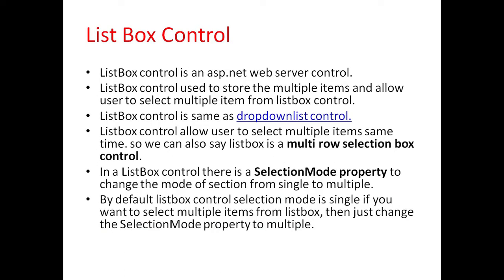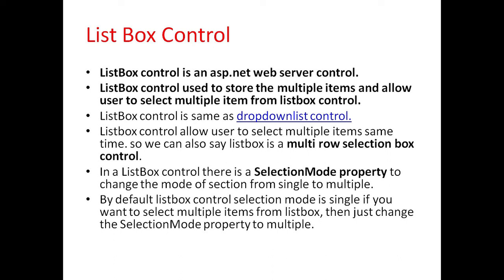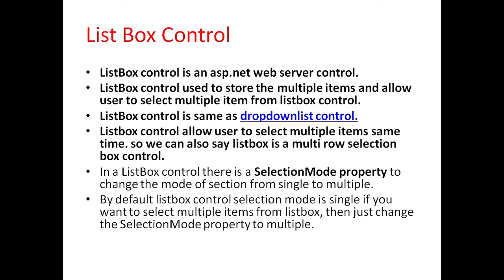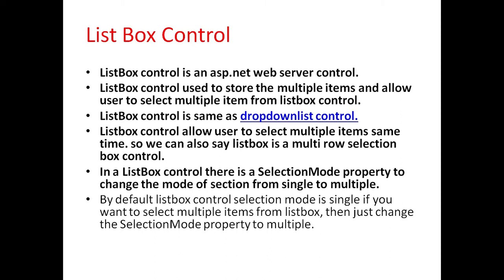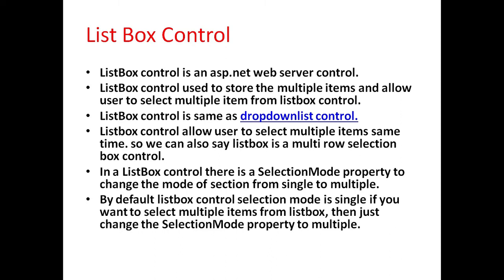Next is list box control. List box control is an ASP.NET web server control. This control is used to store multiple items and allow the user to select multiple items from the list box. Unlike the drop down list, the list box allows the user to select multiple items at the same time, so we can also call it a multi row selection box control. In a list box control there is a selection mode property to change the mode of selection from single to multiple. By default, the list box control selection mode is single. If you want to select multiple items, just change the selection mode property to multiple.